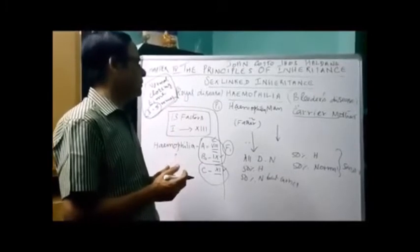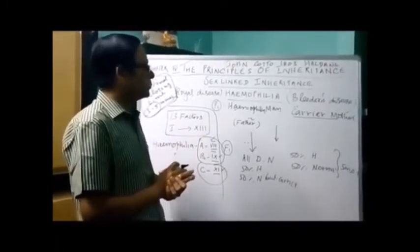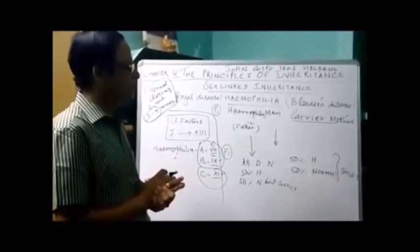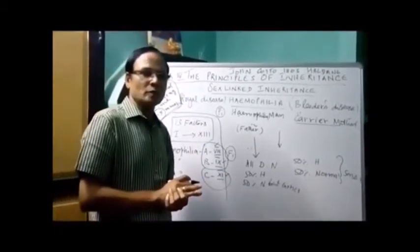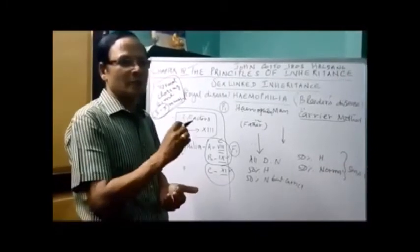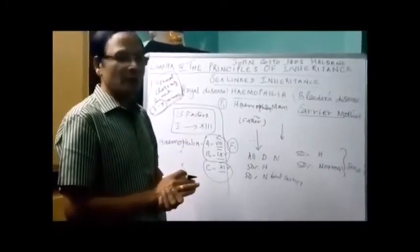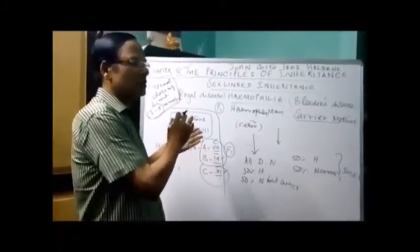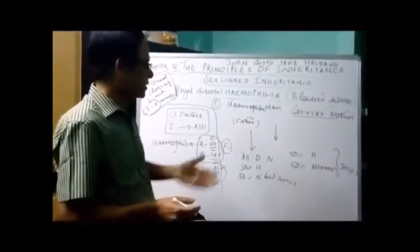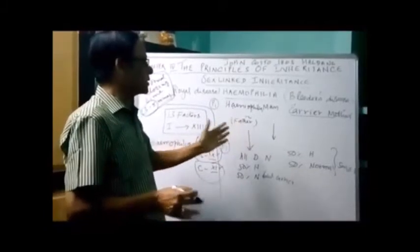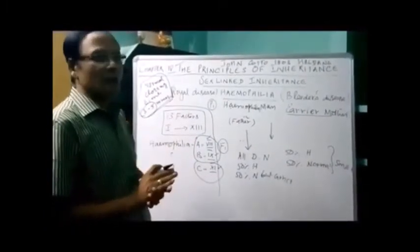Males are affected more than females. The reason is that males are hemizygous — the same condition as in colorblindness. So this is about hemophilia, and its inheritance is similar to colorblindness.